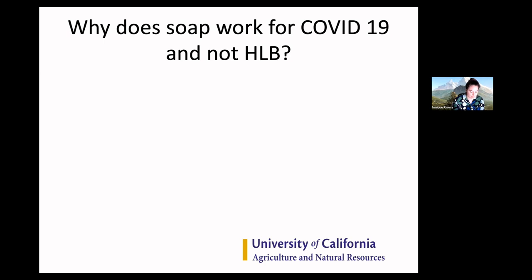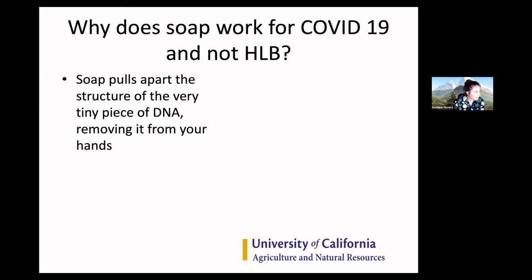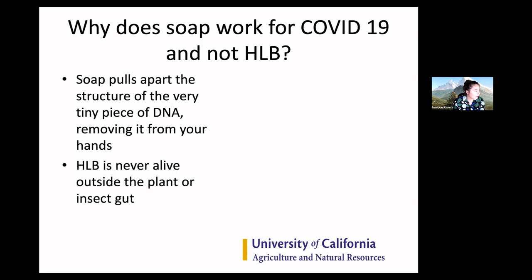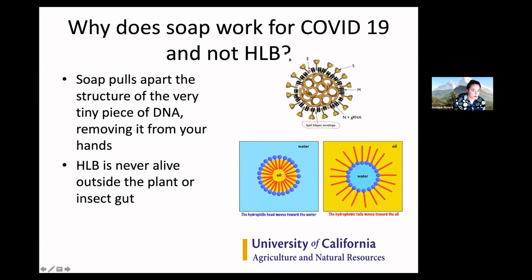Why does soap work for COVID-19 and not HLB? Soap is really effective for destroying viruses in part because it pulls apart the structure of the virus itself. HLB is never alive outside the plant or the insect gut, so there's no opportunity to use soap to pull it apart. Soap basically has something that's attracted to water and something that is repelled by water. When it comes in contact with a virus — which has a lipid bilayer envelope — it basically just rips it apart because of the power of attraction to water and oil, pulling apart the virus.